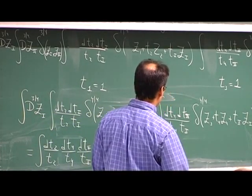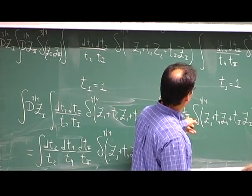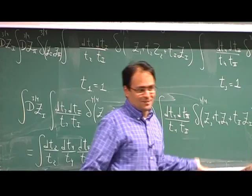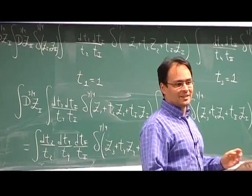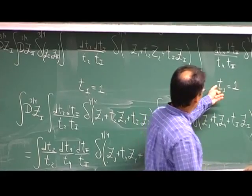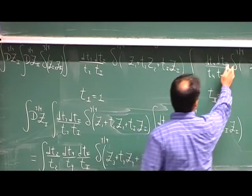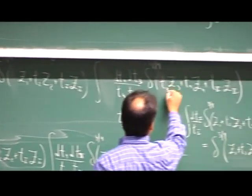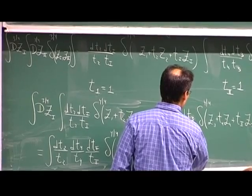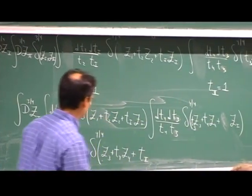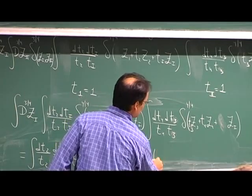Maybe my gauge choice wasn't that nice — very good, let's change my gauge fixing here. It doesn't matter, right? It's a gauge, there's no wrong gauge. There is such a thing as an inconvenient gauge and a convenient gauge, so I chose an inconvenient gauge. The most convenient choice would be to set this equal to 1. So we do the same thing — we're now in business because we get a T3 here, and we replace this thing by Z1 + T2·Z2.